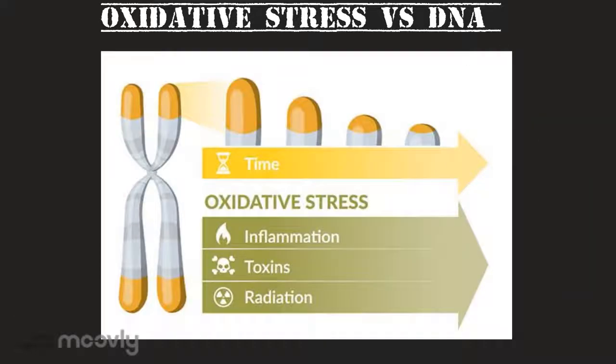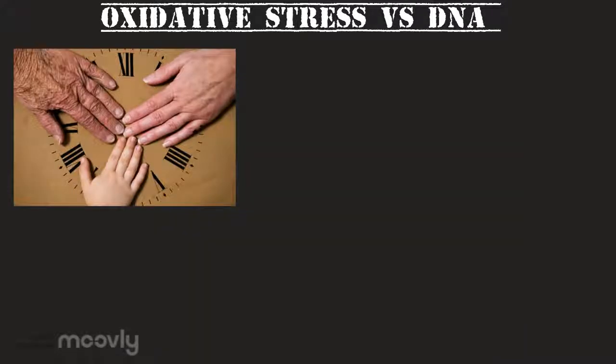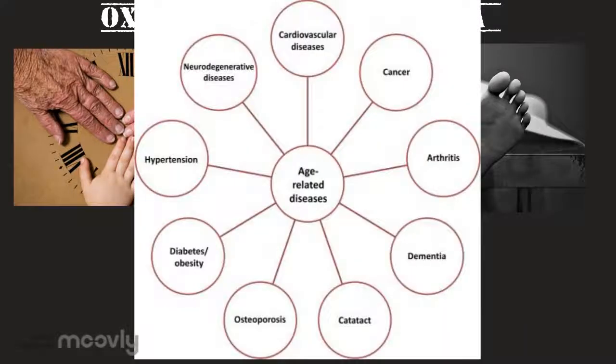However, oxidative stress increases the quantity by which telomeres are shortened, therefore accelerating telomere loss. Telomere shortening is associated with aging, mortality, and age-related diseases.